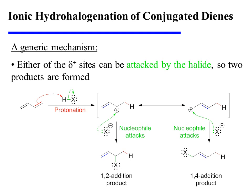The resonance delocalization of the positive charge spreads partial positive character over two different centers in the molecule, either of which can be attacked by the halide in the second step of the mechanism.